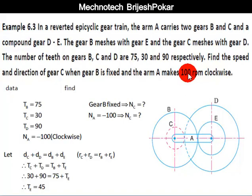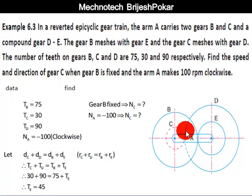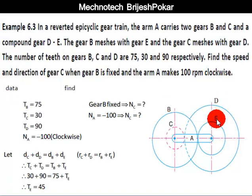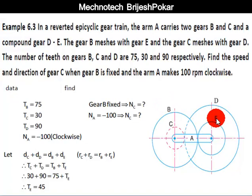Hello friends, welcome to Magnetitech YouTube channel. This is the second video for gear train examples. In a reverted epicyclic gear train, as you can see in the figure, arm A carries two gears B and C, and a compound gear D-E. Gear B meshes with gear E, and gear C meshes with gear D.